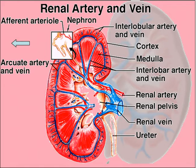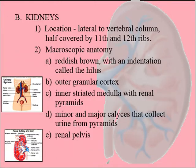Urine empties into areas called calyces — these little river areas — and then into the renal pelvis, and then out through the ureter. So major and minor calyces, then the renal pelvis.